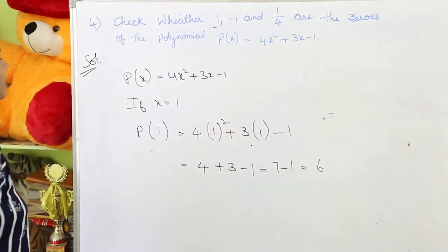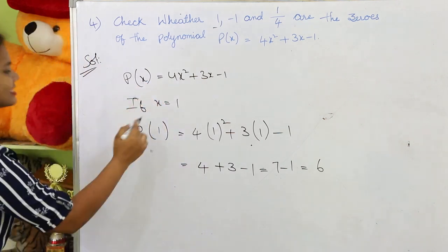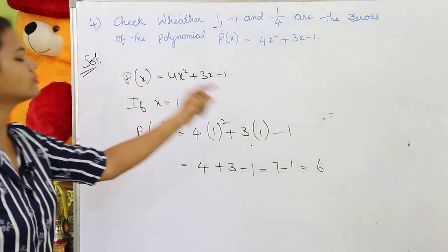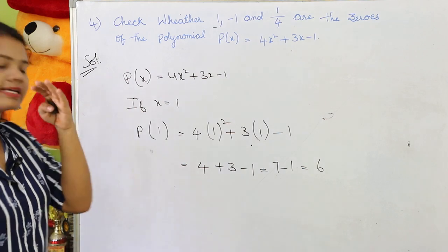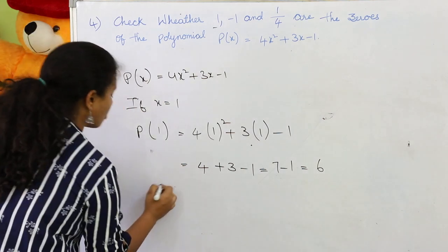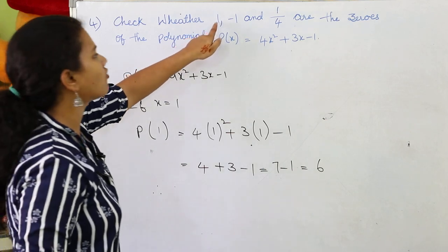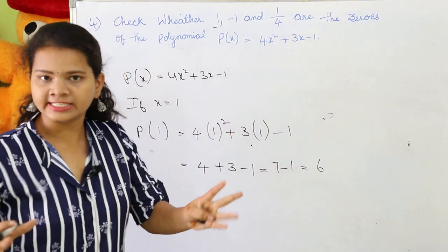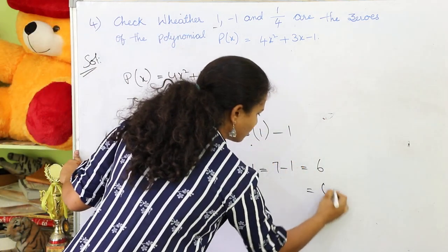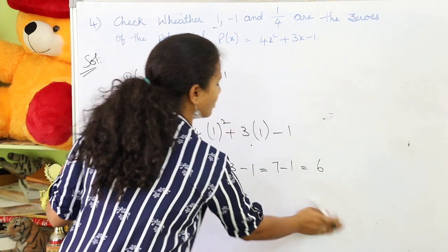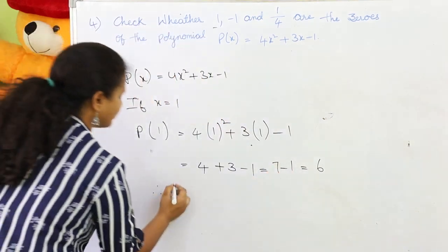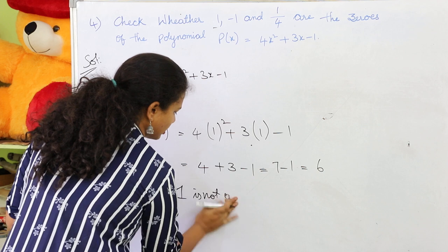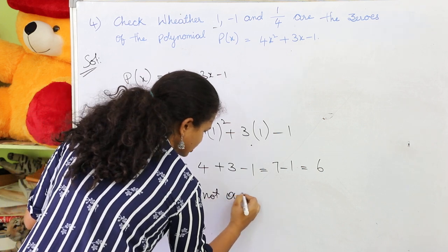So if x = 1, the value we got is 6. Since we are getting a value other than 0, this means 1 is not a zero of the polynomial. If the sum were 0, it would be a zero, but we got 6. Therefore, 1 is not a zero of the polynomial.